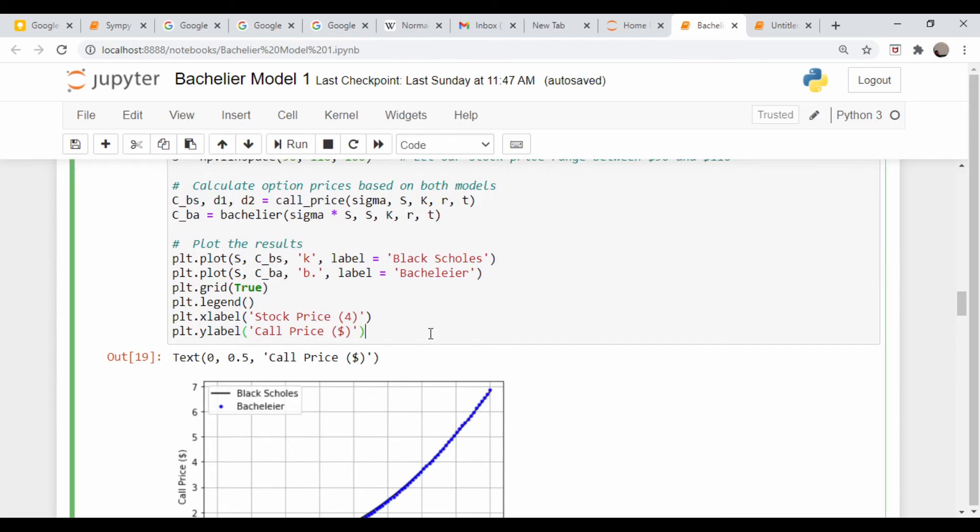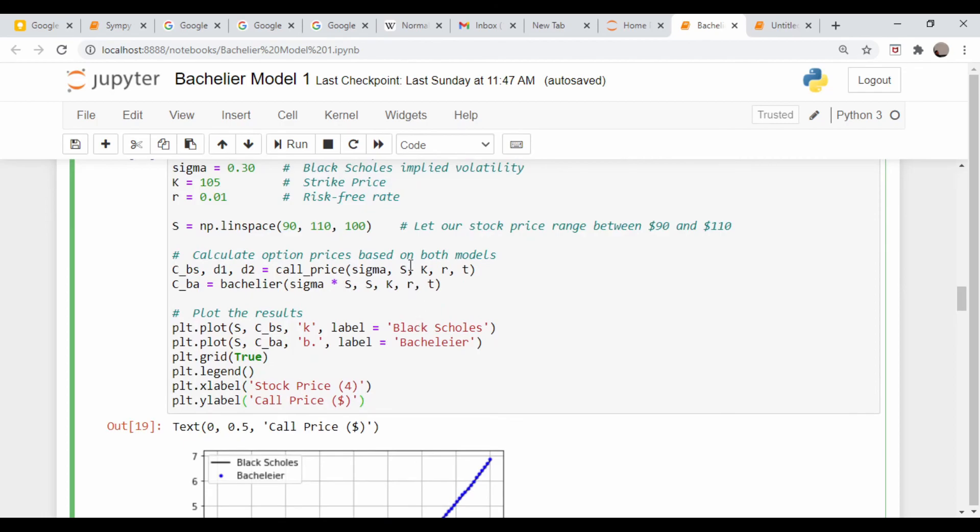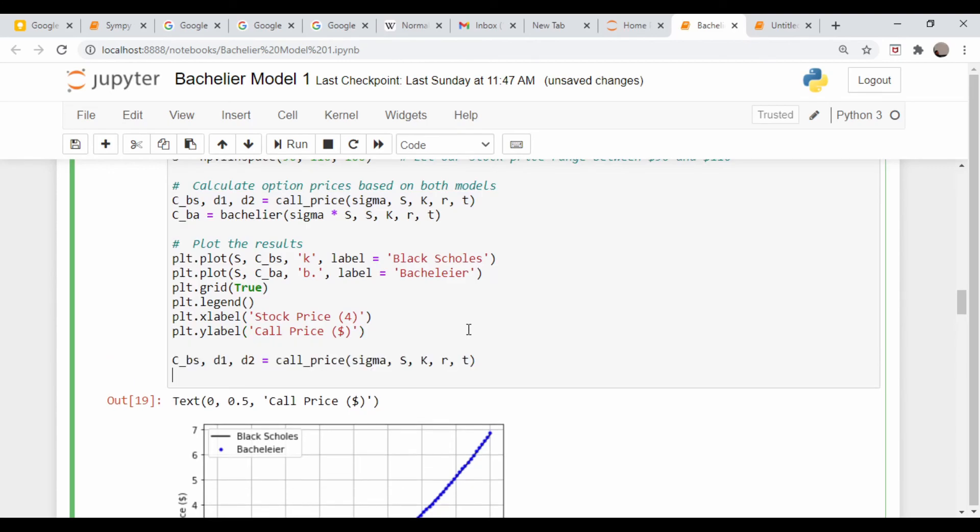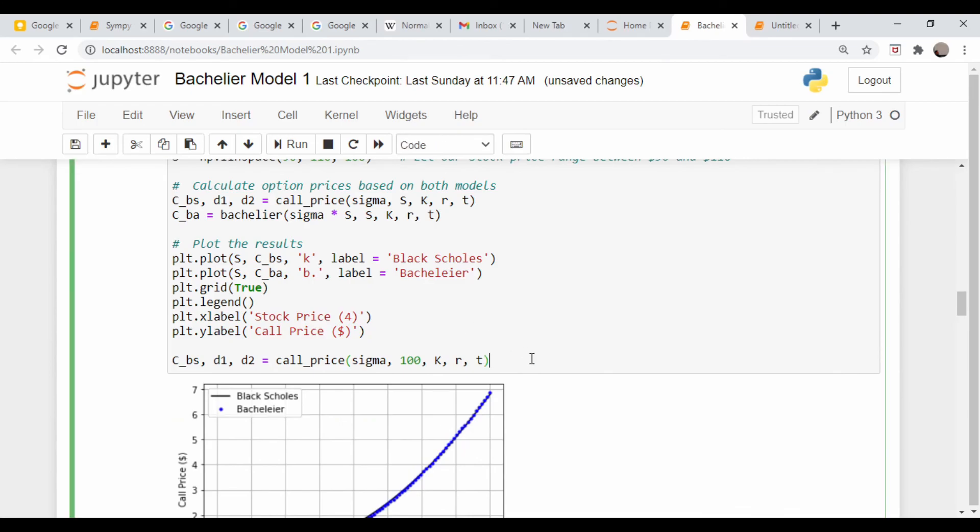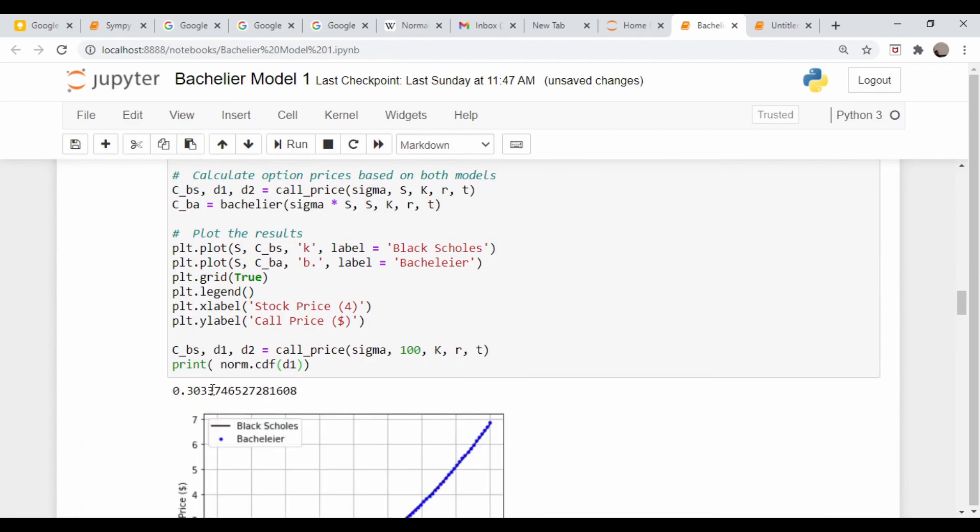Let's go back to this notebook here and calculate what the delta is in the Black-Scholes case. It should be 28, 29, 30, about the same, because these curves are basically parallel to each other. The delta of an option in the Black-Scholes model is just equal to this D1 term run through the normal cumulative distribution function. Let's just copy this and paste it in. Set a stock price equal to 100, run it and make sure there are no errors. Now let's print out our delta. Delta should be equal to norm.cdf of D1. And we get a delta of a little more than 30, which is well within the ballpark. Let me get rid of this because we don't really want it in the notebook.